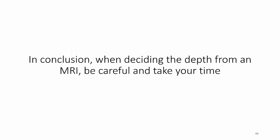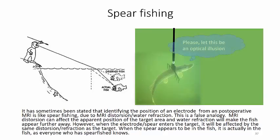Concerning MRI, I would also like to mention that it has sometimes been stated that identifying the position of an electrode from a postoperative MRI is like spearfishing due to MRI distortion and water refraction. This is a false analogy. MRI distortion can affect the apparent position of the target area and water refraction will do the same with the fish. However, when the electrode or spear enters the target, it will be affected by the same distortion and refraction as the target. When the spear appears to be in the fish, it is actually in the fish, as everyone who has spearfished knows — and the same is true regarding the electrode.